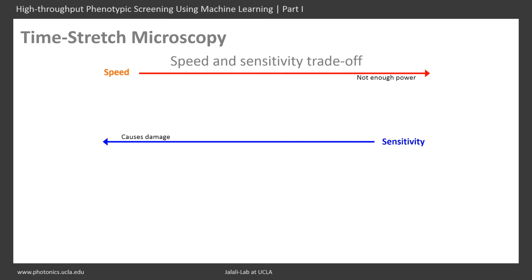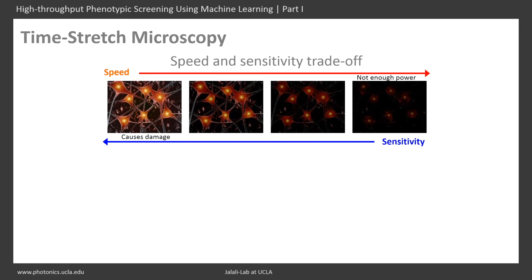The fundamental problem in performing high-speed imaging is that cameras become less and less sensitive at higher and higher speeds. At the highest frame rates, there is less time to collect photons in each frame, before the signal becomes weaker and more prone to noise.